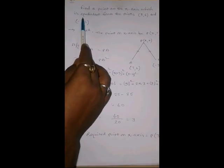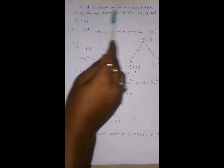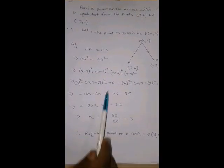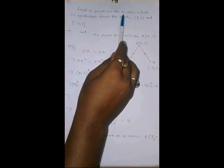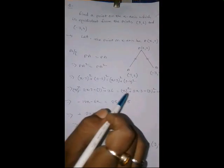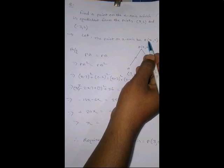Now, let us see another sum. This is very important sum. We have to find a point on x axis, which is equidistant from these two points. This is very important sum for your examination point of view. We have to find a point on x axis. And, as you know, that any point on x axis, y coordinate is 0.